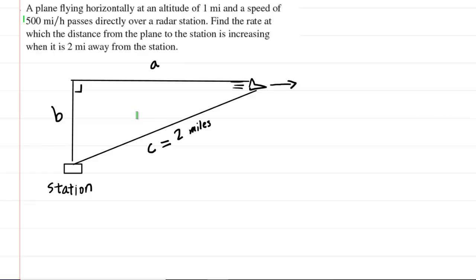So we've gone ahead and drawn a right triangle to represent the information given in this question. You can see that B would represent the altitude of the airplane. It is simply how high vertically above the ground the airplane is. And we were actually told that that altitude was 1 mile. So let's write down that B is equal to 1 mile in this case.